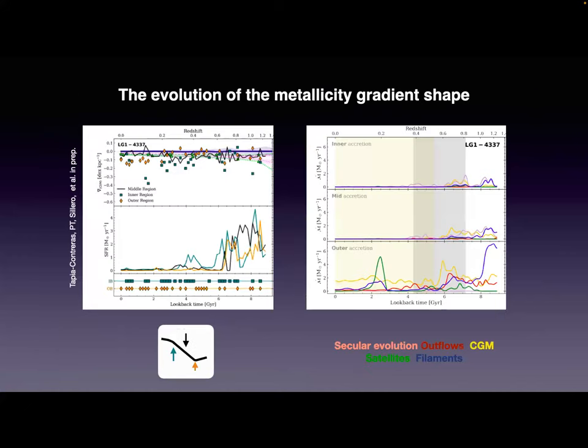Following the evolution of metallicity gradients for one Milky Way-type galaxy: the black line shows the gradient in the middle part, the thin line (green) shows the inner region gradient which is mostly negative, and the orange shows the outer part. They change as a function of time from redshift ~1.2 to redshift zero. In the lower panel, the star formation rate in each region (inner, middle, outer) shows that when there is a large change or break in the metallicity gradient, there is also an increase in star formation activity in each of the regions.